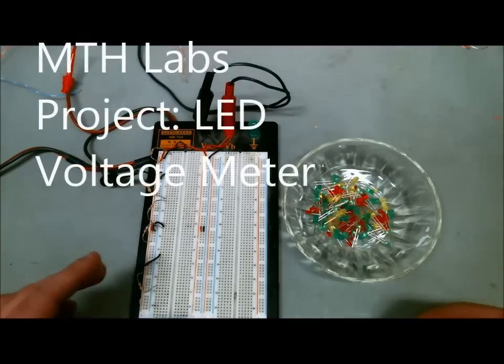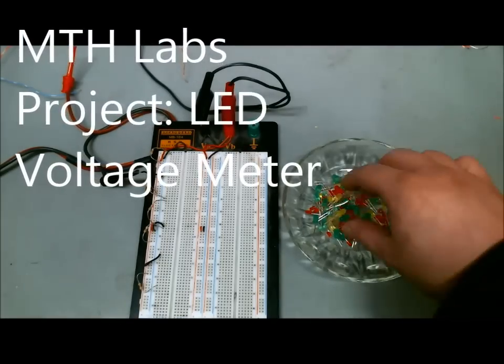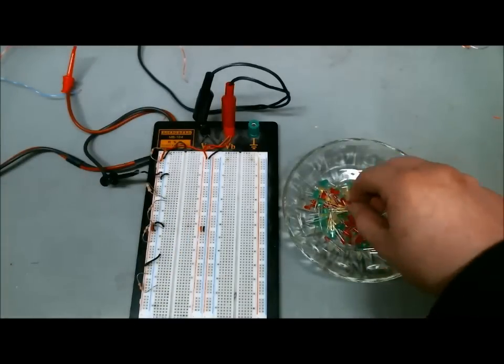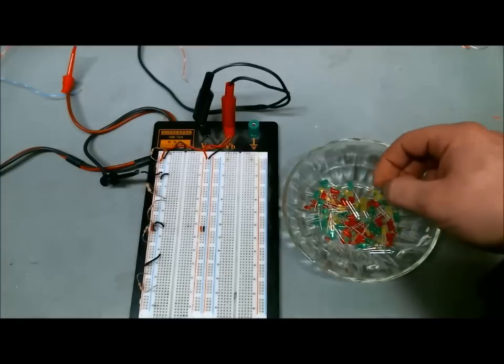Alright, in this video I'm going to show you how you can make a voltage meter just using LEDs and resistors. And the way this works is every LED has a set voltage drop.